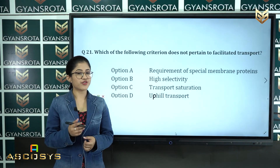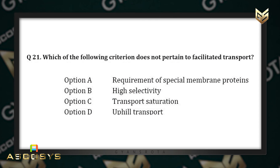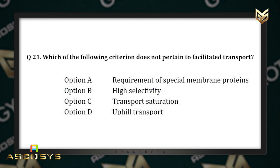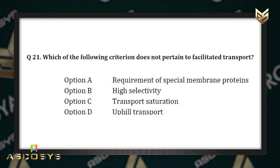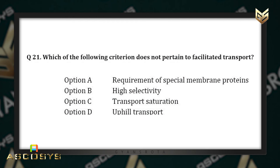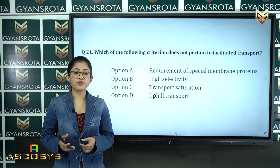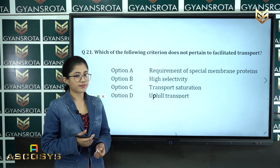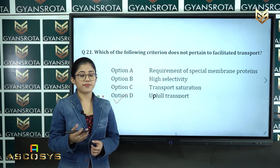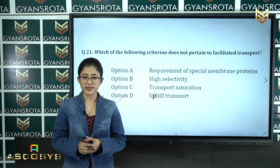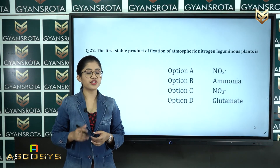Question number twenty-one: which of the following criterion does not pertain to facilitated transport? Option A: requirement of special membrane proteins, option B: high selectivity, option C: transport saturation, option D: uphill transport. This is from the chapter transport in plants. The correct answer is option D — uphill transport does not pertain to facilitated transport.